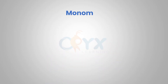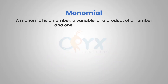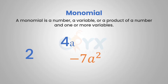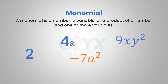A monomial is a number, a variable, or a product of a number and one or more variables. For example, 2 would be a monomial, 4a would be a monomial, negative 7a squared, and 9xy squared are all monomials.